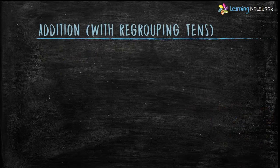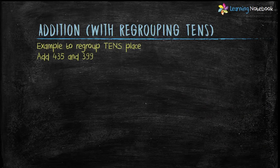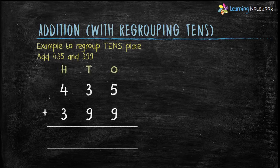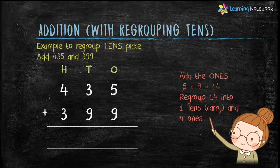Let's learn addition with regrouping at the tens place. The example is to add 435 and 399. Write the numbers in column form. Add the digits at the ones place: 5 plus 9 equals 14. Regroup 14 into 1 ten (carry) and 4 ones.